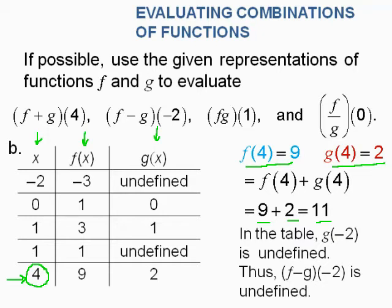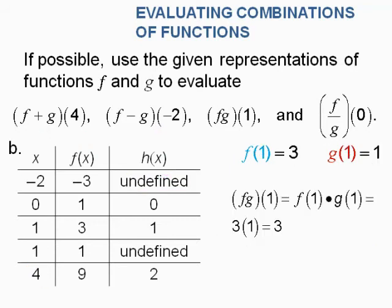In the table, g of negative 2 is undefined. So when x is negative 2, g of x is undefined, which means f minus g of negative 2 is undefined again. They keep giving us that one where we can't do it.